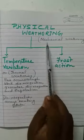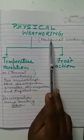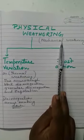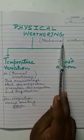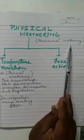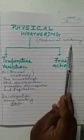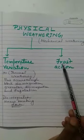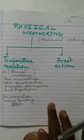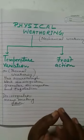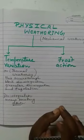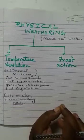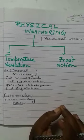First of all, we will discuss regarding physical weathering. What is the meaning of physical weathering? Physical weathering or mechanical weathering is disintegration - that means breaking down of rocks without any change in their chemical composition. It takes place either due to temperature variation or frost action.